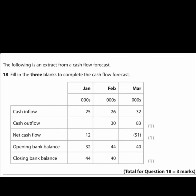In February, the inflows are £26,000 but the outflows are £30,000 — so more money is leaving the business than coming in. That gives you a negative net cash flow of minus £4,000. You can write it in brackets as they've done for March.